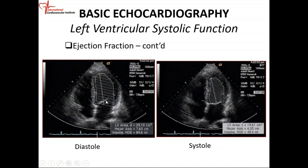The end-diastolic volume and end-systolic volume are calculated. The difference is the stroke volume — the amount pumped per beat. Dividing the stroke volume by the end-diastolic volume gives the ejection fraction. Multiplying stroke volume by heart rate gives the cardiac output.